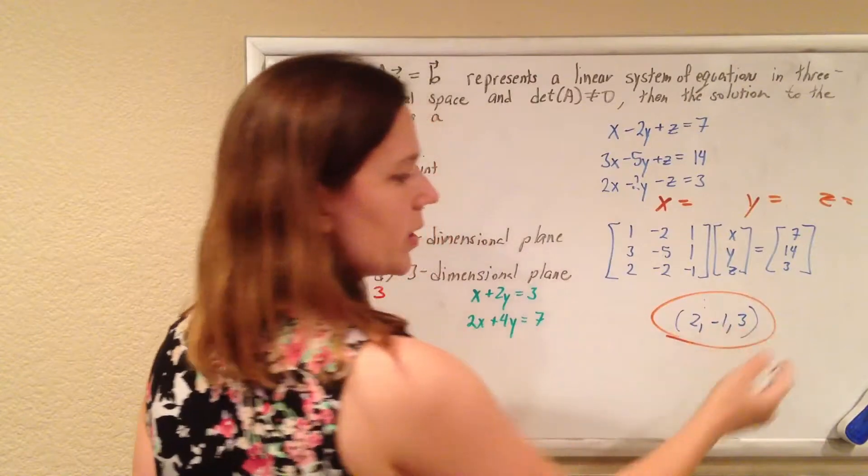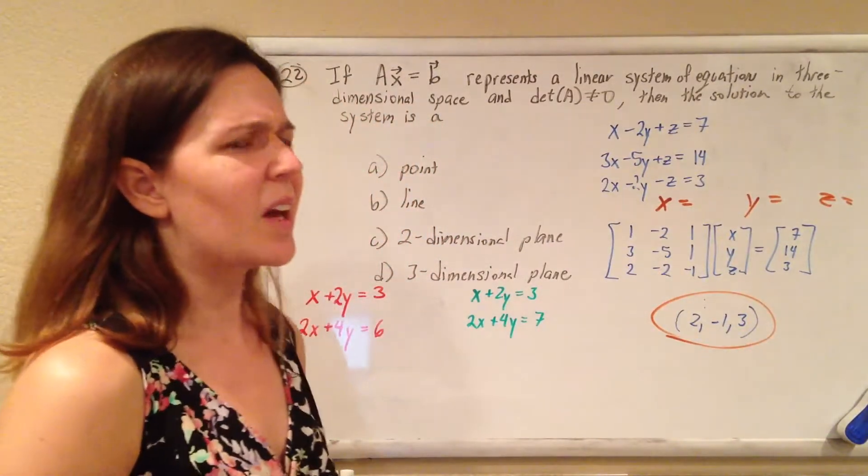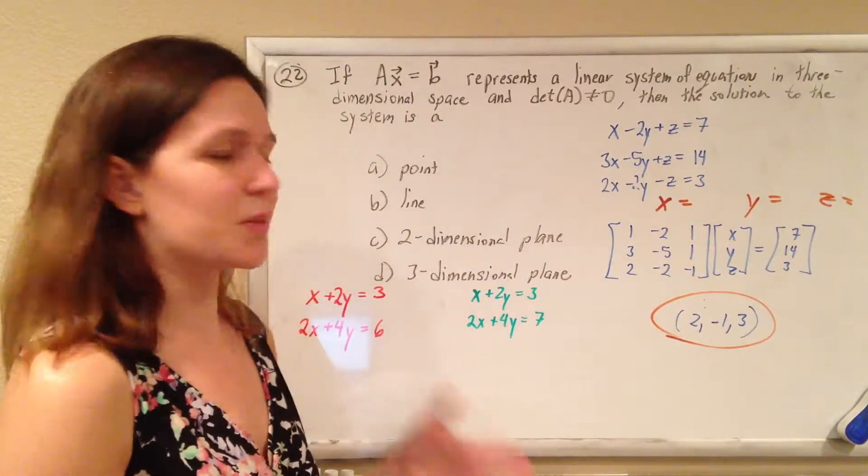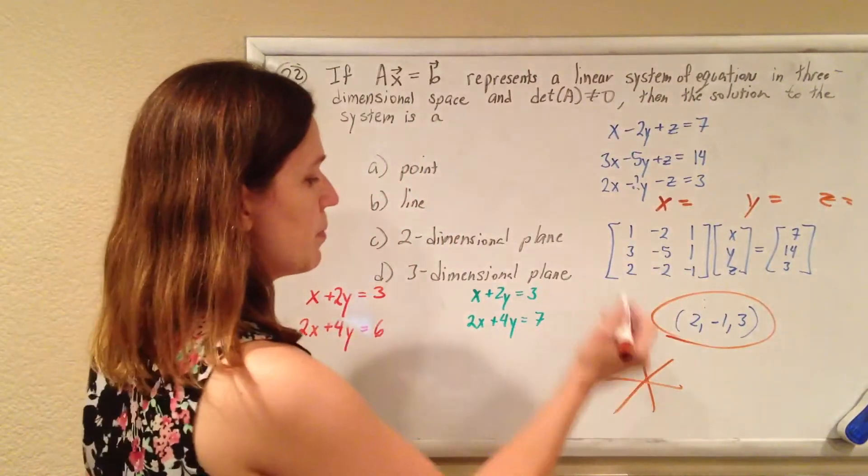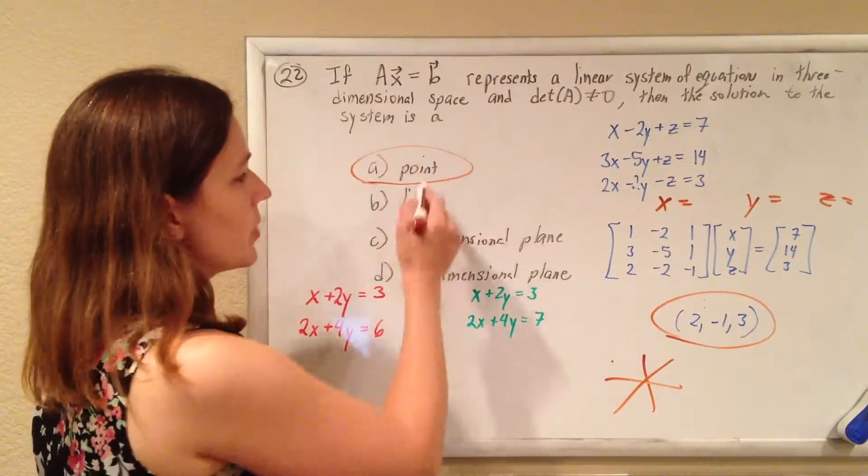x equals something, y equals something, z equals something. And what is that? It's just a point, right? It's a point in three-dimensional space. Just bam. And that's what they're looking for.